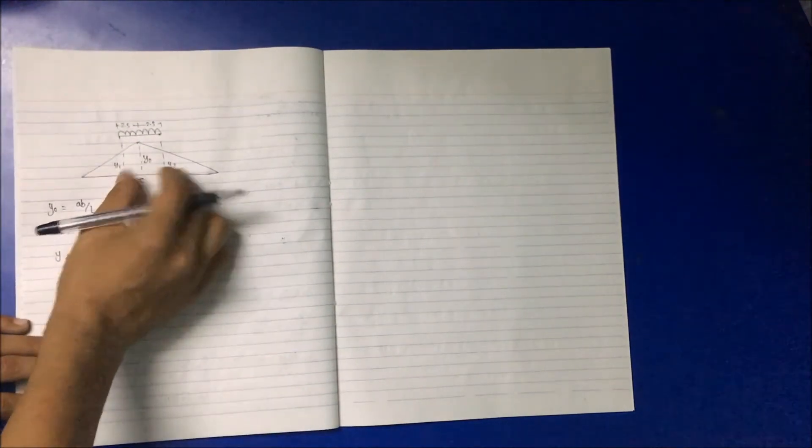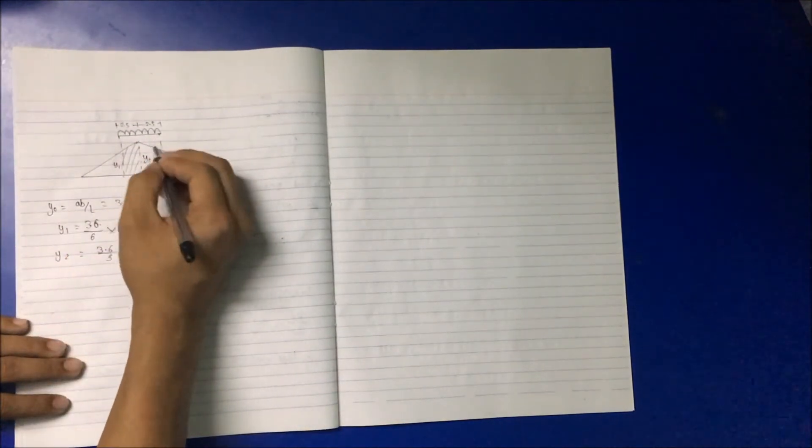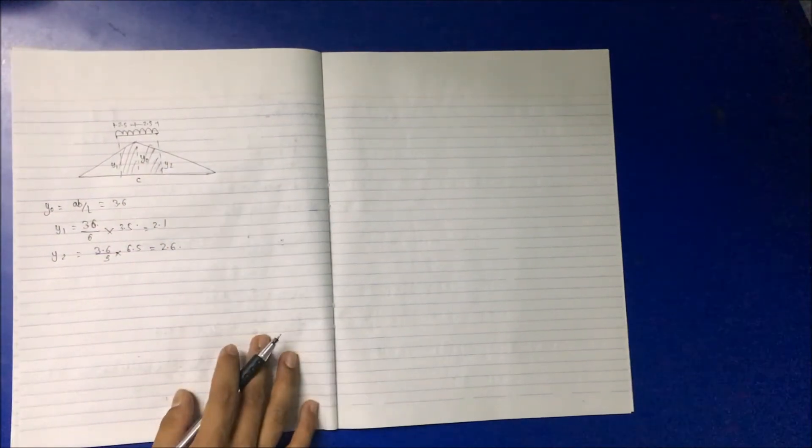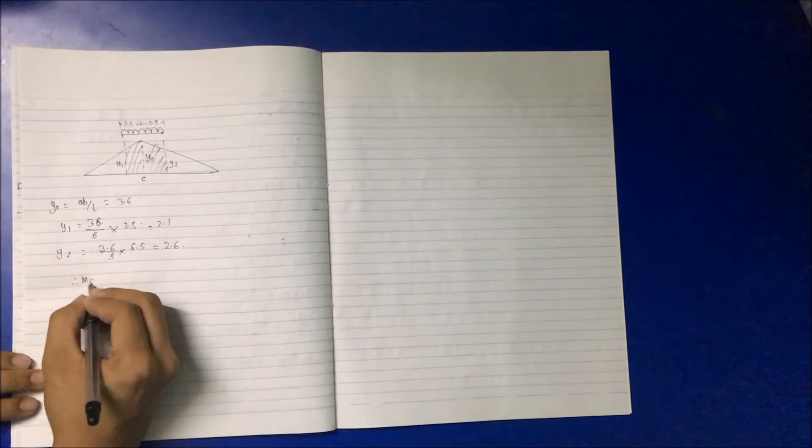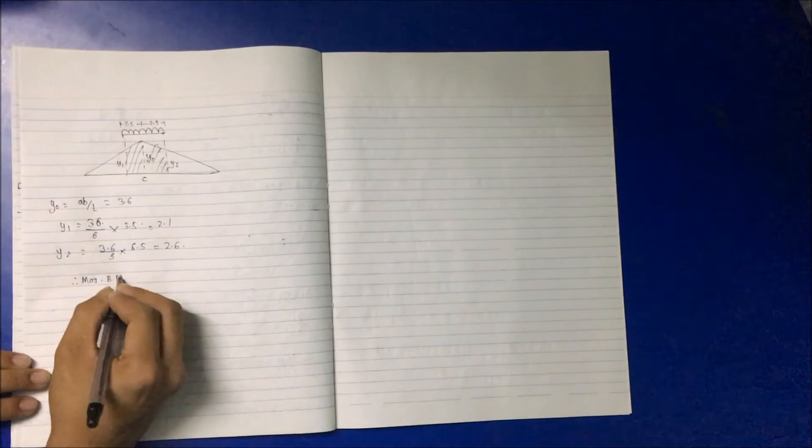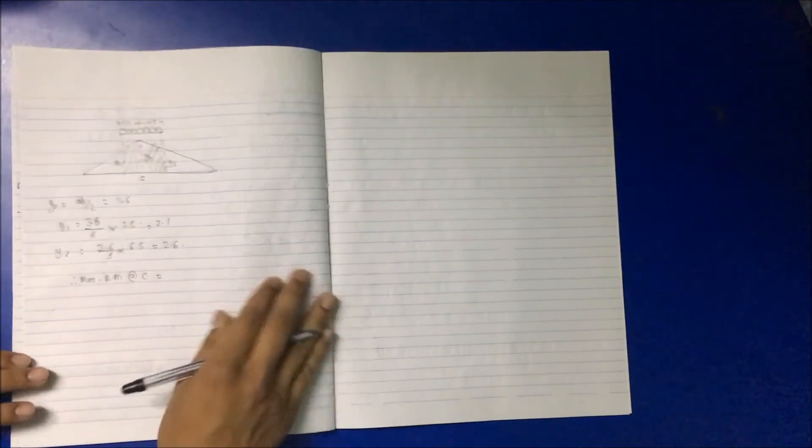Now again applying the trapezoidal area, we can calculate the maximum bending moment. So maximum bending moment at C is equal to...